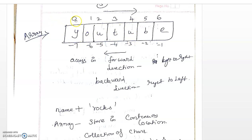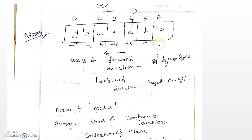In the forward direction, the index starts from 0 and ends with 6. The length of the string is 7 characters — 1, 2, 3, 4, 5, 6, 7. Since it starts from 0, it ends at length minus 1, that is 0 to 6. In Python you can also access the string in the backward direction.